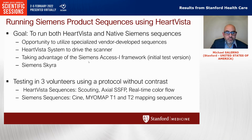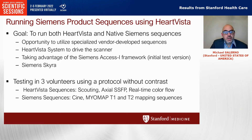We performed studies in three volunteers using a protocol without contrast. This included HeartVista sequences for scouting, axial SSFP, and real-time color flow, and Siemens sequences for CINE and then T1 and T2 mapping with myomaps.